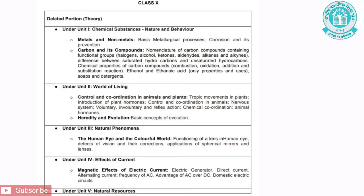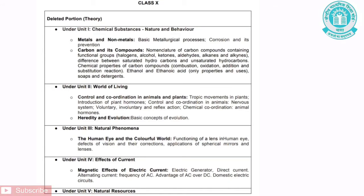The second chapter under Unit 2 is Heredity and Evolution. The topic removed is Basic Concepts of Evolution. Under Unit 3, Natural Phenomena, the chapter is The Human Eye and the Colourful World. The topics removed are: Functioning of a Lens in Human Eye, Defects of Vision and their Correction, and Applications of Spherical Mirrors and Lenses.